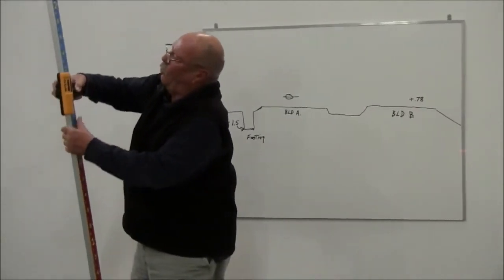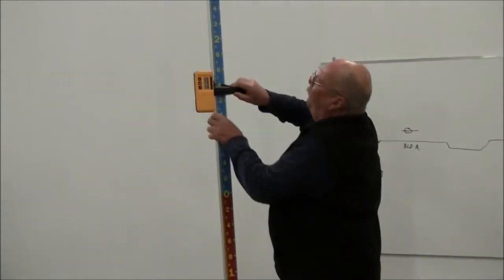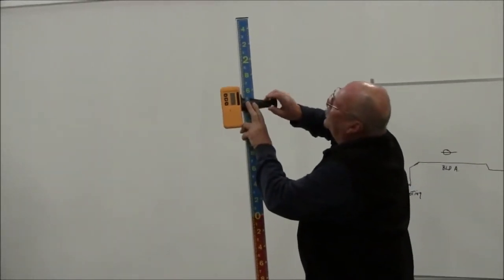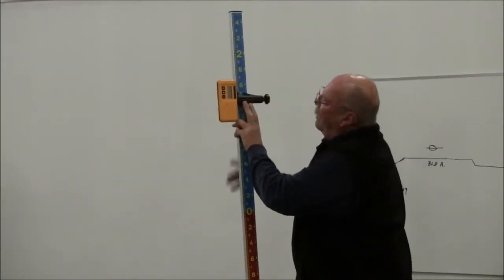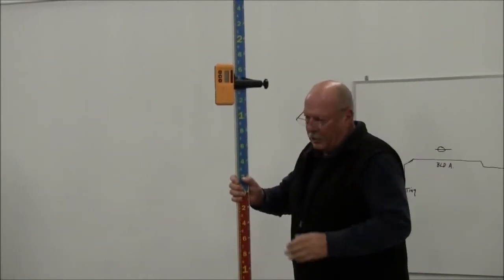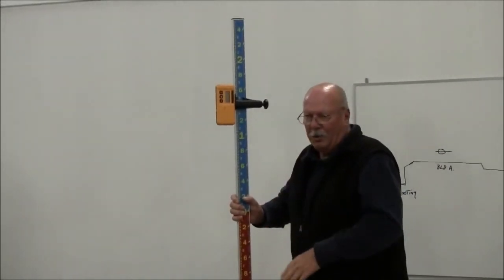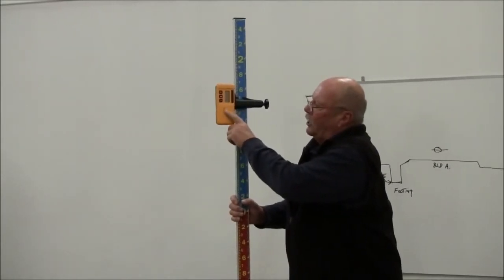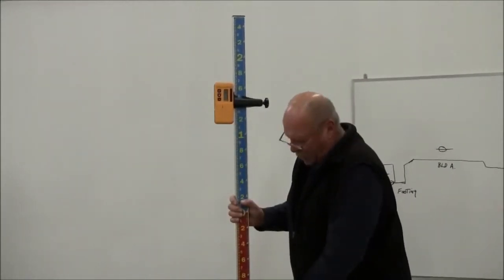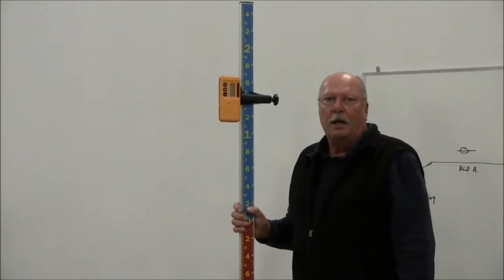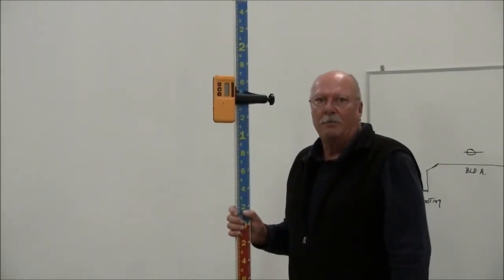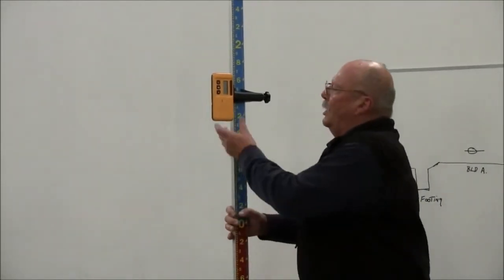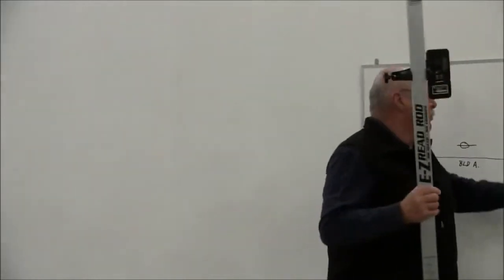And now as I'm digging, when the laser detector is saying on grade, the bottom of my rod will be at that elevation, 1.50 below. And conversely, if I have a subgrade elevation on building B.